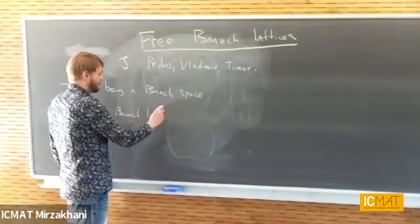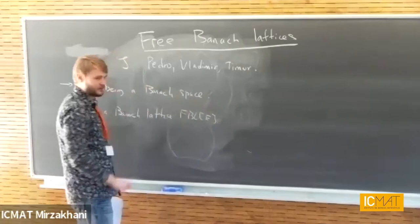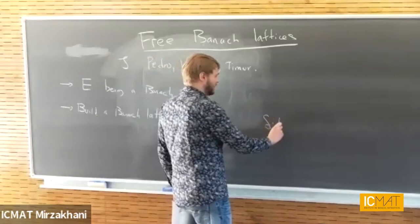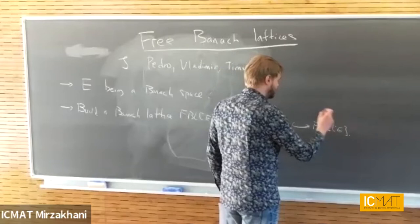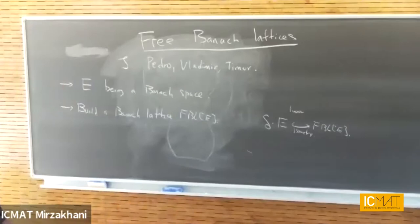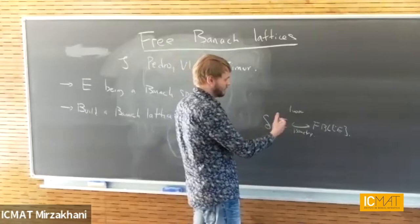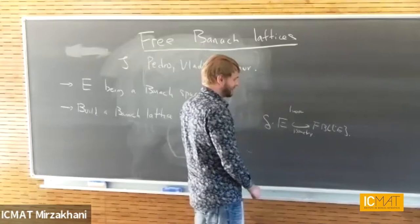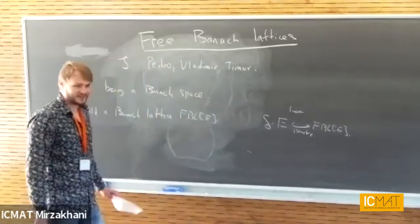We will build a Banach lattice — FBL(E), as it's denoted — together with some relation between E and FBL(E), encoded by a map delta which takes E into FBL(E), and that map is a linear isometry — an isometric embedding. We want to do this in such a way that we preserve the structure of E; we're building a lattice out of it, but we don't want to have any extra relations other than those from the metric and linear structure of E, plus the necessary things to build the Banach lattice.